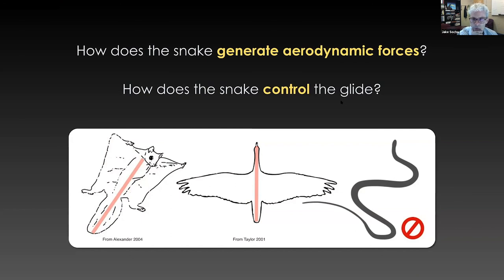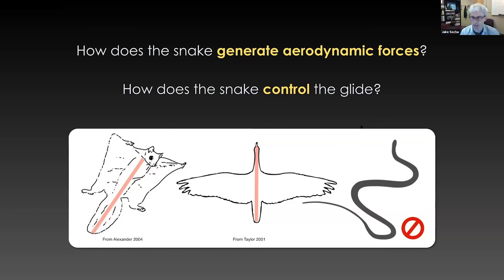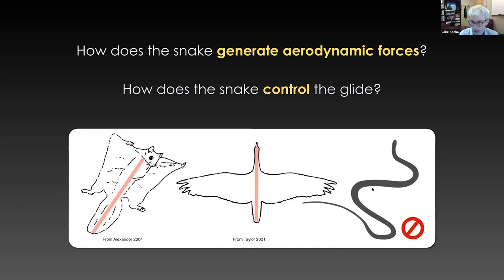Let's talk about how the snake generates aerodynamic forces and controls its glide. I was talking about other gliders being symmetrical — you can imagine a line down the center of the body, with left and right symmetric, as in a bird here. But that's not so with our flying snake. We thought early on that a still flying snake would be a bad scene — it's potentially going to flip over in the air. So we've been interested in this question for quite a long time.